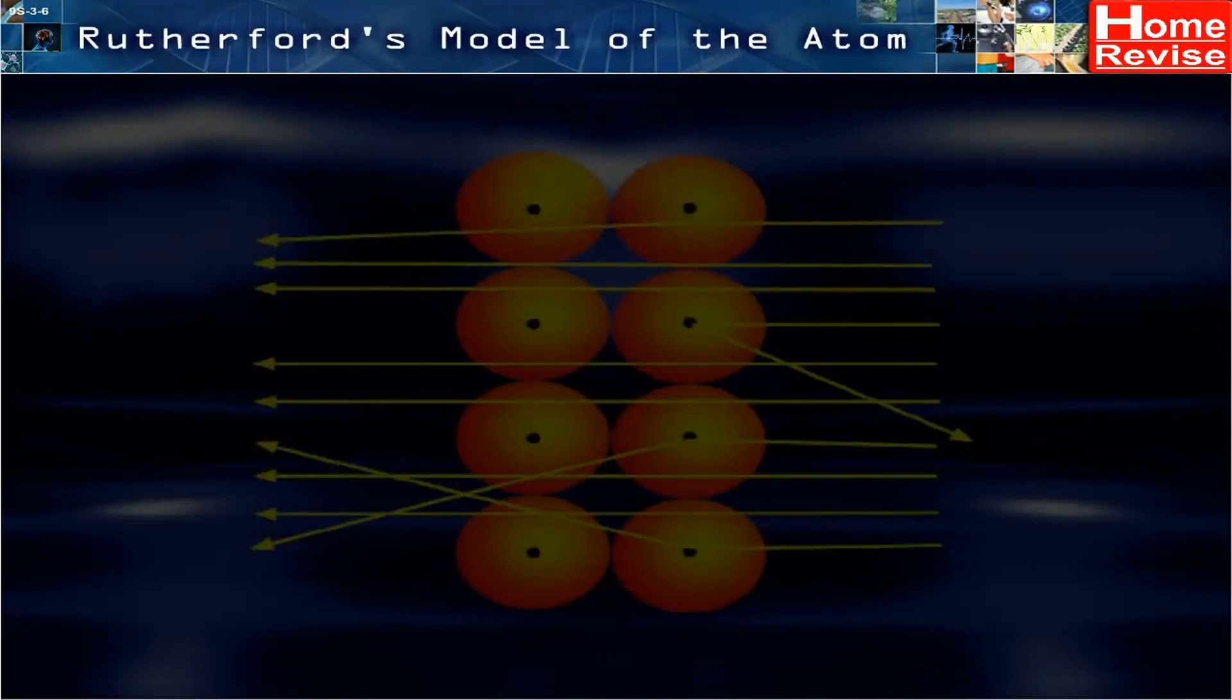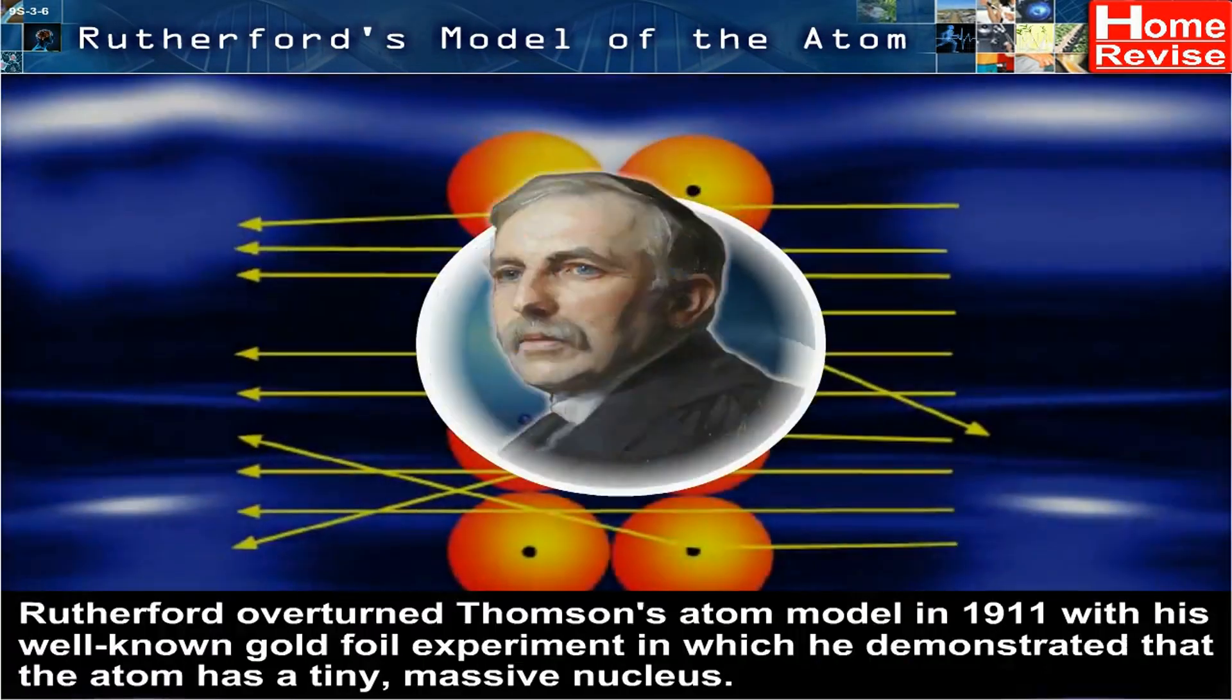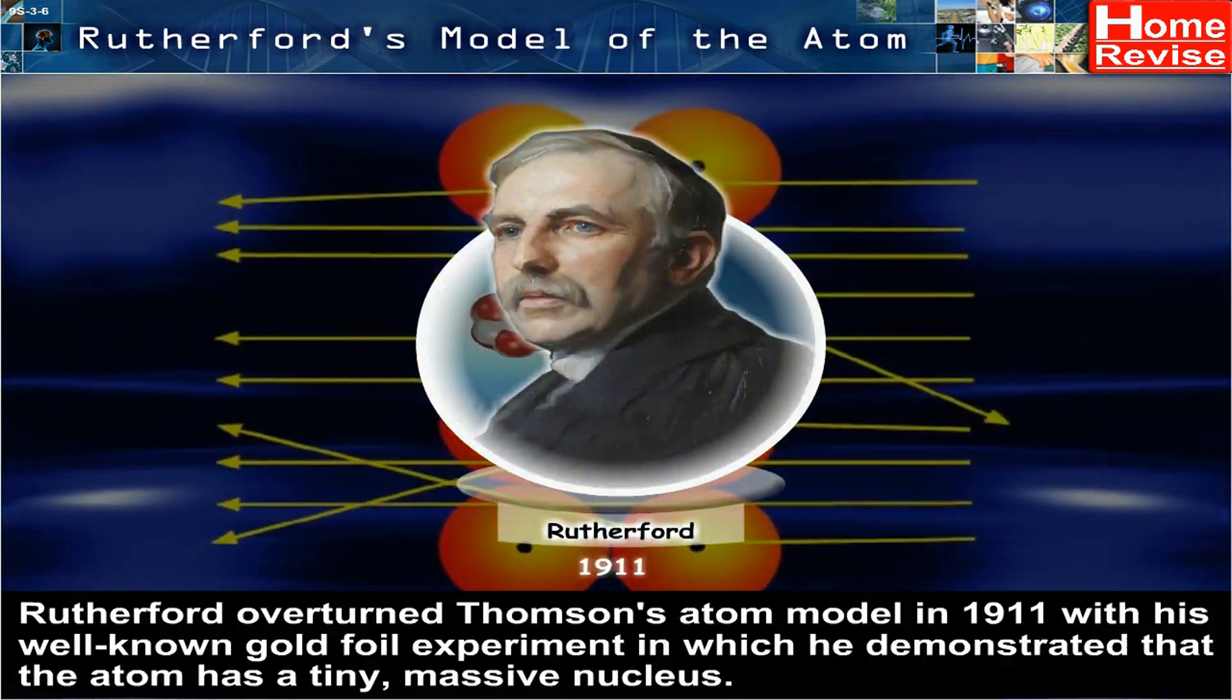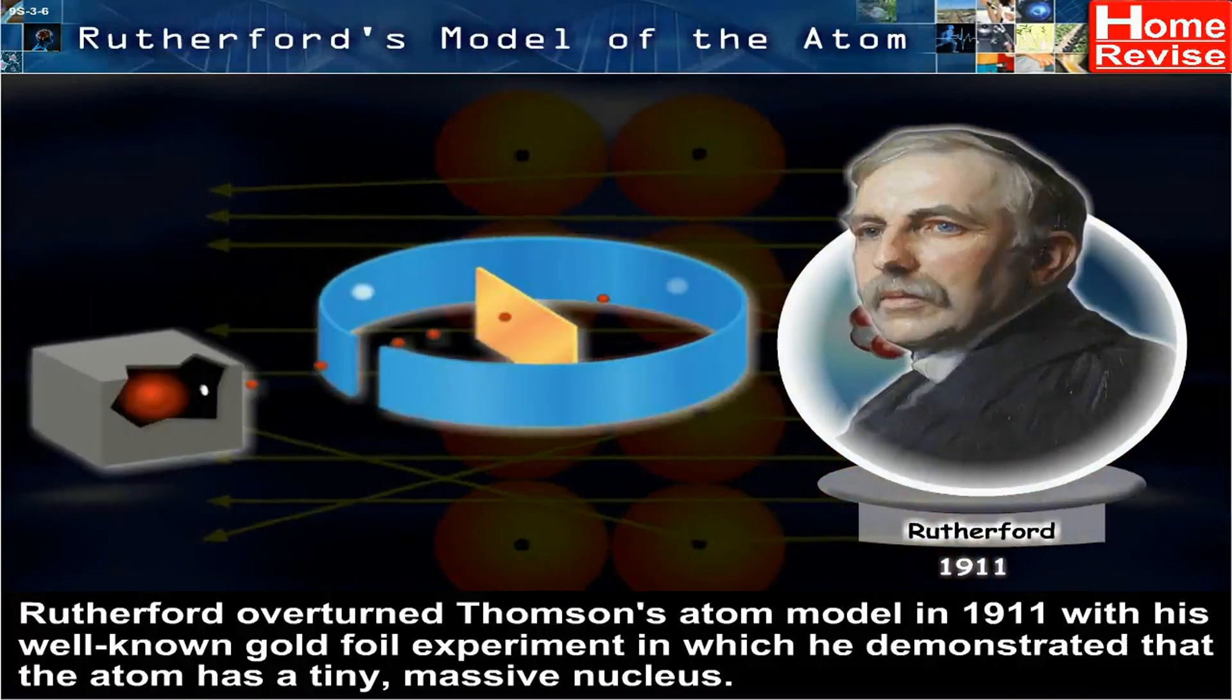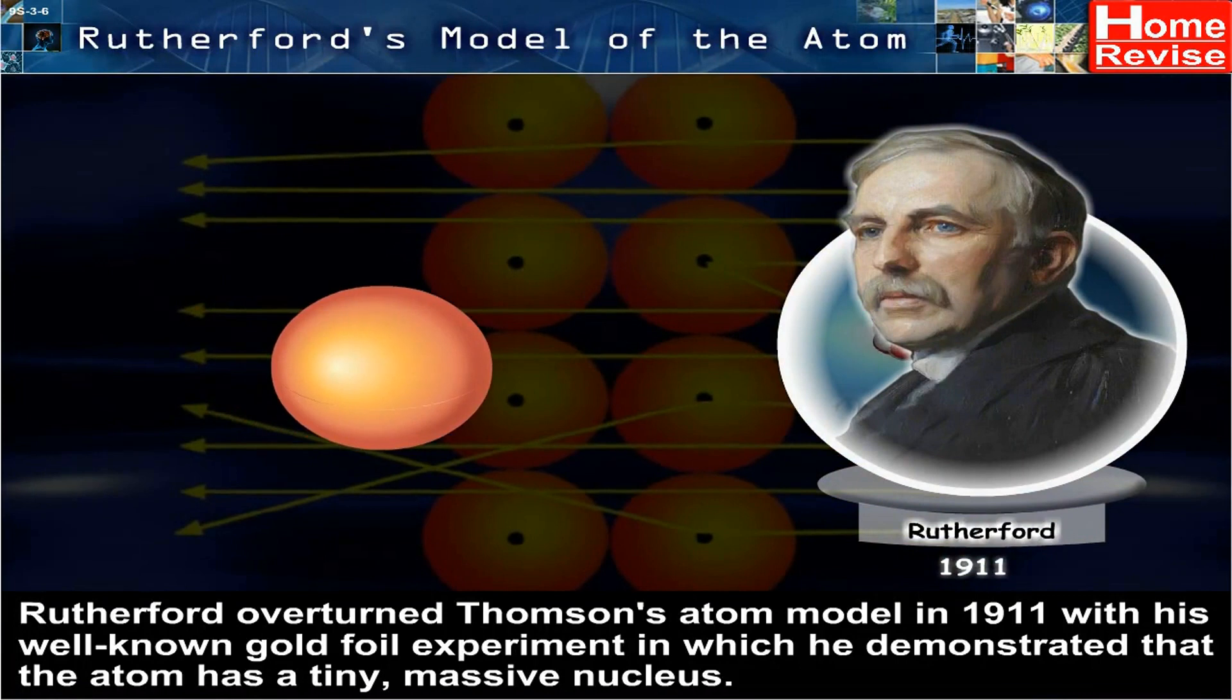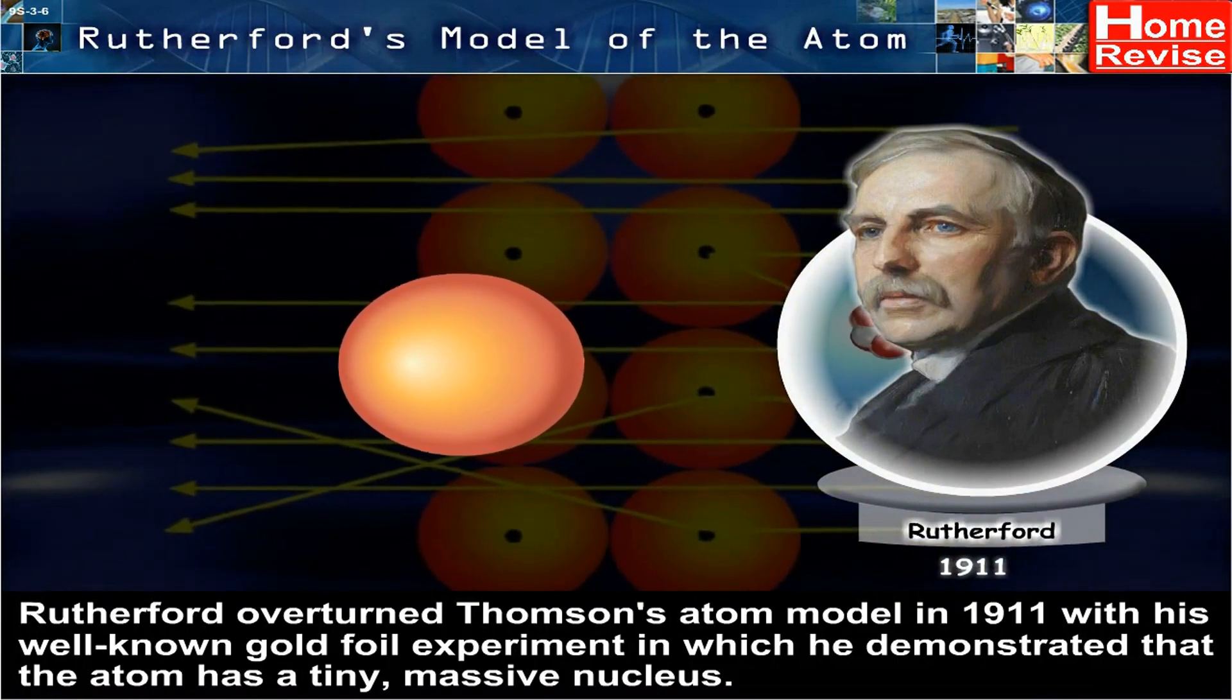Rutherford's Model of the Atom. Rutherford overturned Thomson's atom model in 1911 with his well-known gold foil experiment in which he demonstrated that the atom has a tiny, massive nucleus.